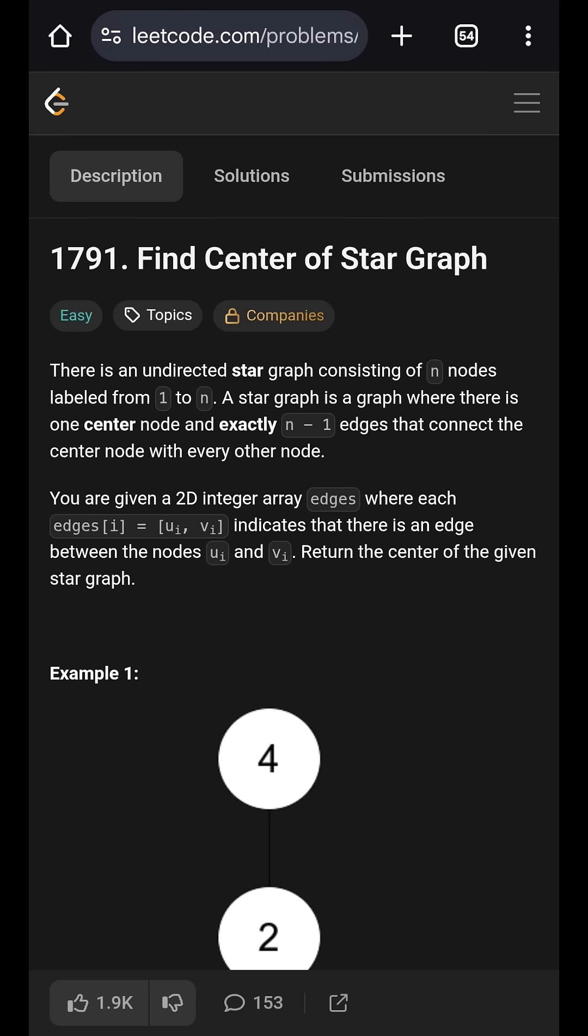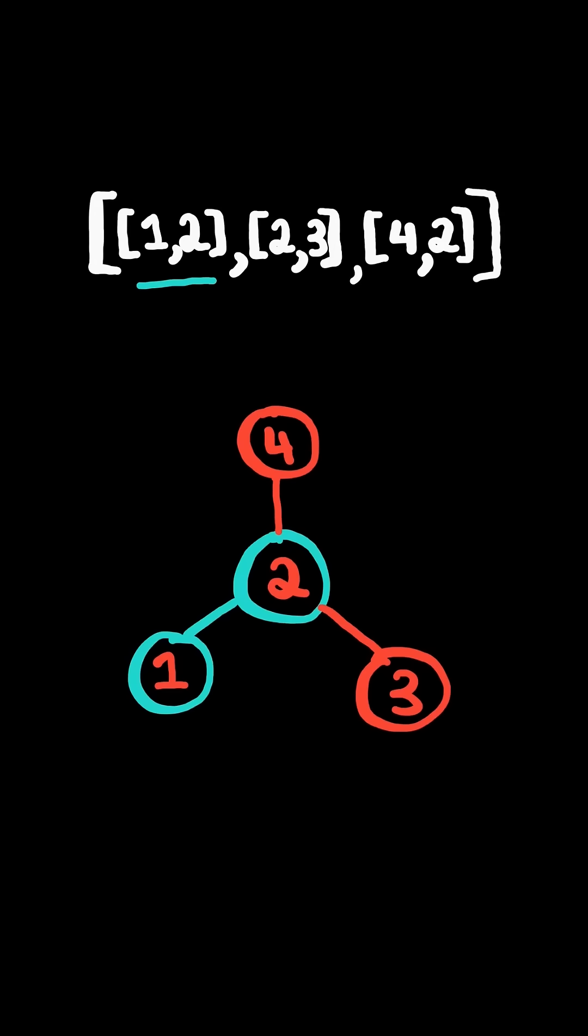Find center of star graph. Given a list of edges, consider the following graph. There is an edge from 1 to 2, an edge from 2 to 3, and an edge from 4 to 2.